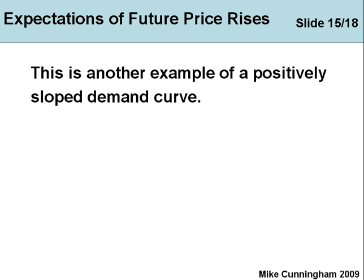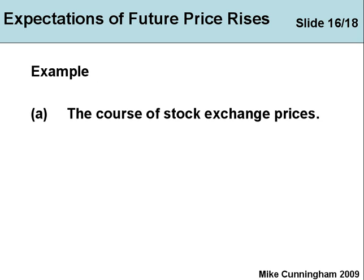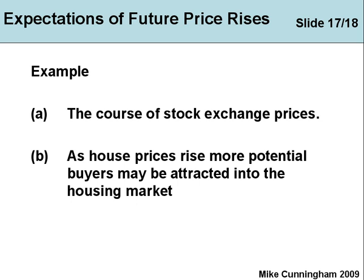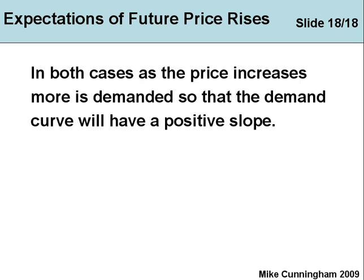There are others — expectations of future price rises. For example, on the stock exchange: if share prices are rising, people might want to buy more shares, which makes them rise even further — it's cumulative causation. If share prices are falling, people will sell. The same happens in the housing sector: when house prices are rising dramatically, lots of people want to buy; when they're falling, the market reverses. In both cases, as the price increases, more is demanded, so the demand curve has a positive slope.